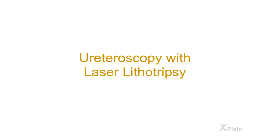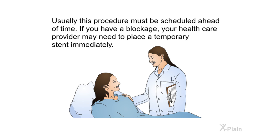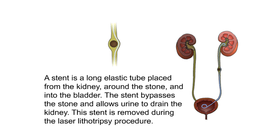Ureteroscopy with laser lithotripsy is performed under general anesthesia. Usually this procedure must be scheduled ahead of time. If you have a blockage, your health care provider may need to place a temporary stent immediately. A stent is a long elastic tube placed from the kidney, around the stone, and into the bladder. The stent bypasses the stone and allows urine to drain the kidney. This stent is removed during the laser lithotripsy procedure.